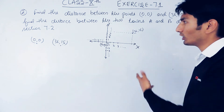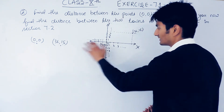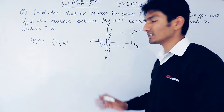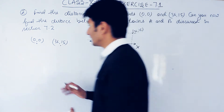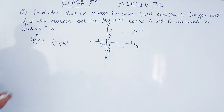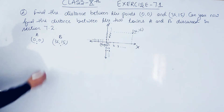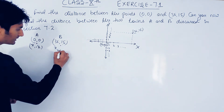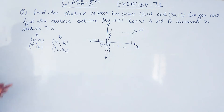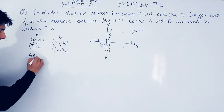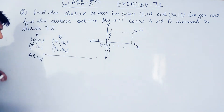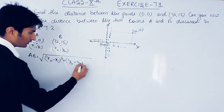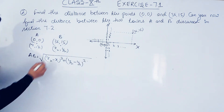This is known as the Cartesian plane. The x-axis is also known as the abscissa and the y-axis is known as the ordinate. To find the distance between these two points, we have a formula: under root of (x2 minus x1) whole square plus (y2 minus y1) whole square. If I consider the first point as (x1, y1) and the second point as (x2, y2), we substitute into this formula.